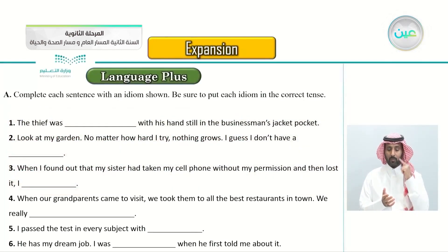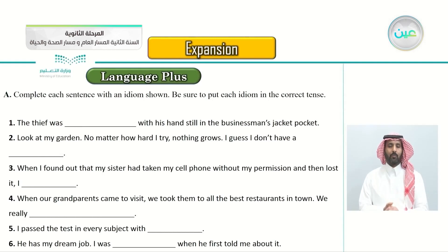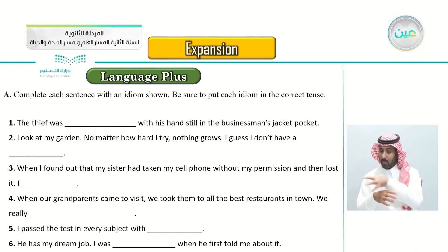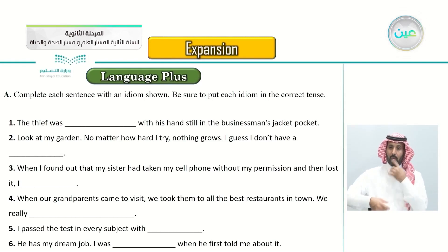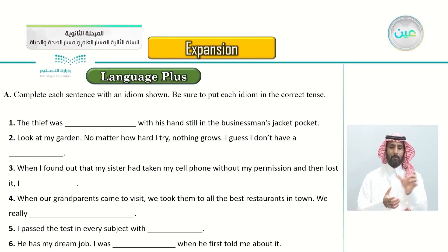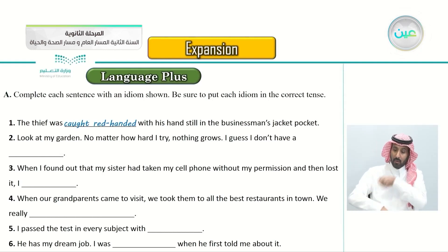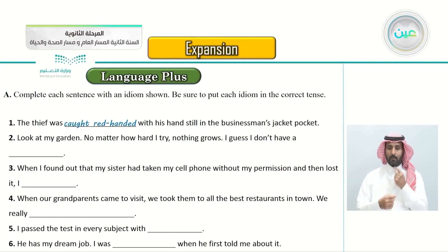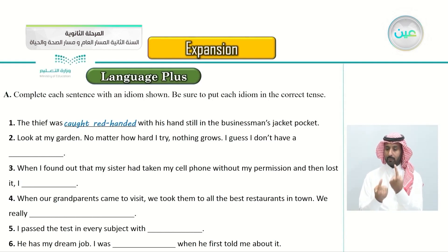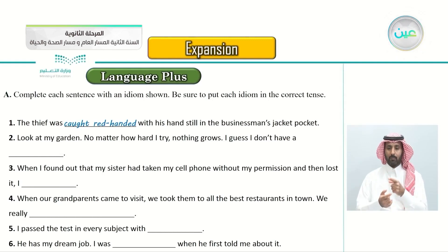Getting back to our question: complete each sentence with an idiom shown, and be sure to put each idiom in the correct tense. Number one: 'The thief was ___ with his hand still in the businessman's jacket pocket.' The answer is: the thief was caught red-handed. Number two: 'Look at my garden - no matter how hard I try, nothing grows. I guess I don't have a ___.' A green thumb - nothing grows in my garden, I don't have a green thumb.